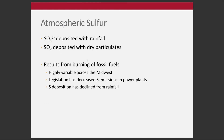Atmospheric sulfur deposition — sulfates deposited with rainfall in both dry and wet forms — is monitored. It gets into the atmosphere through various forms but is exacerbated by the burning of fossil fuels. Deposition occurs as an input of sulfur and is highly variable across the Midwest. Legislation has decreased sulfur emissions in power plants, and subsequently sulfur deposition has declined over the years.